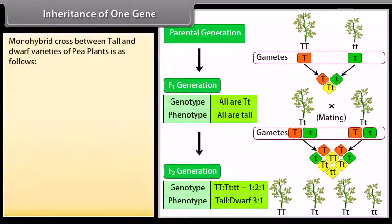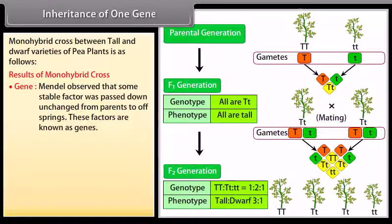Inheritance of one gene. Monohybrid cross between tall and dwarf varieties of pea plants is as follows. Results of monohybrid cross. Gene: Mendel observed that some stable factor was passed down unchanged from parents to offspring. These factors are known as genes.